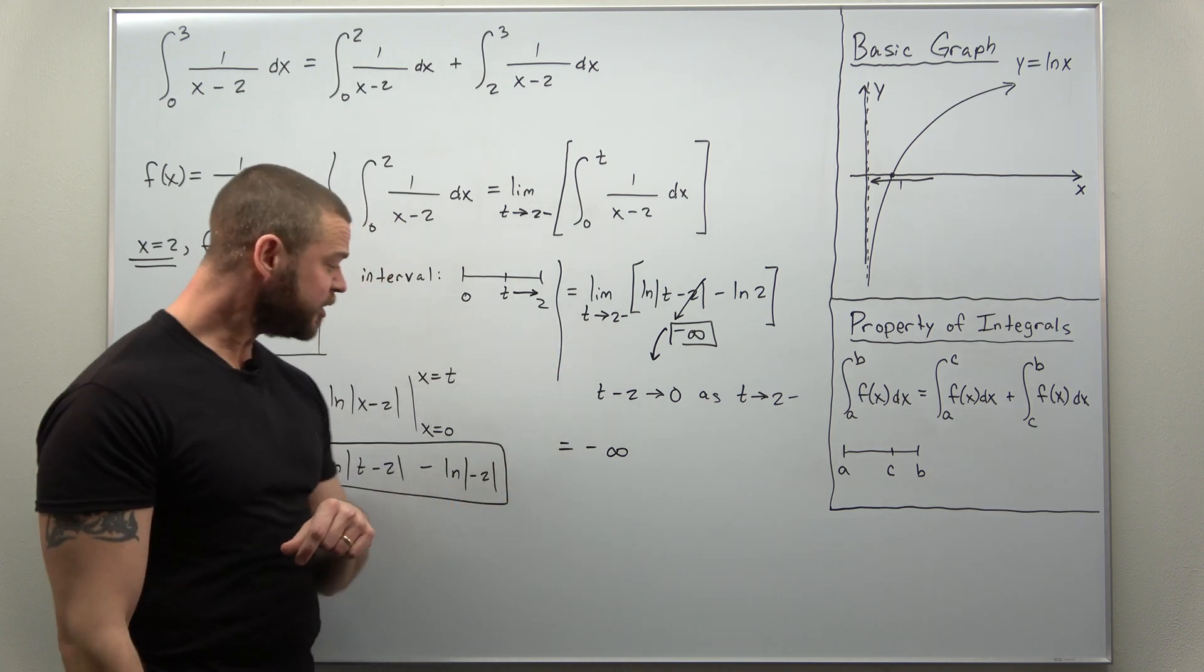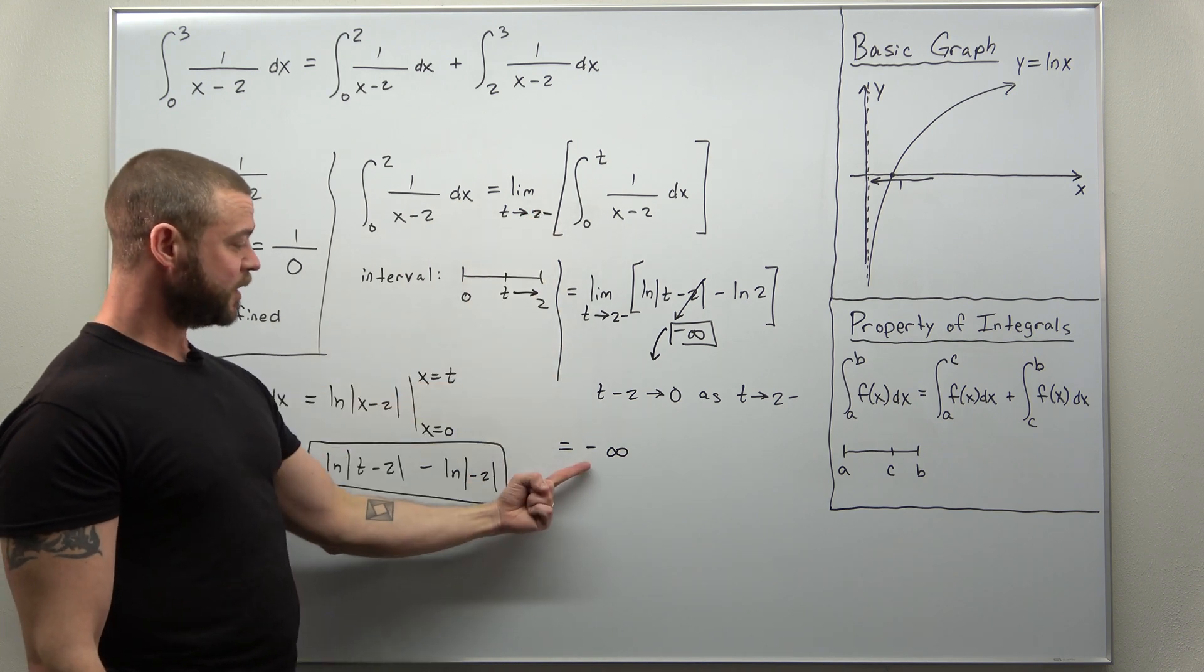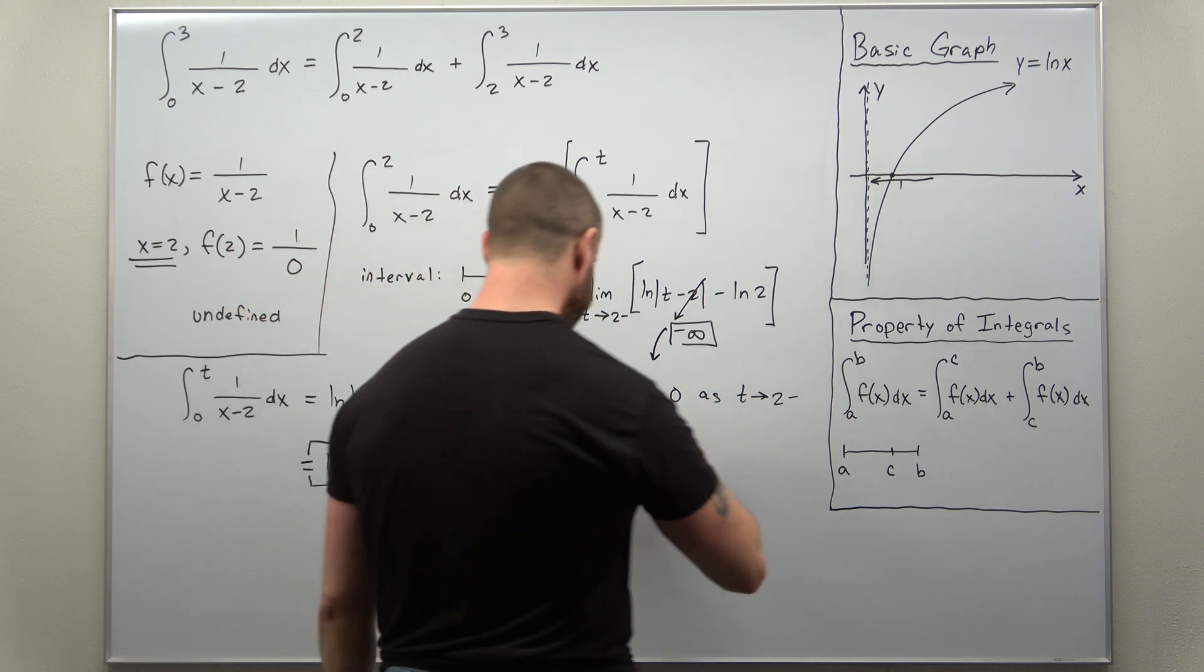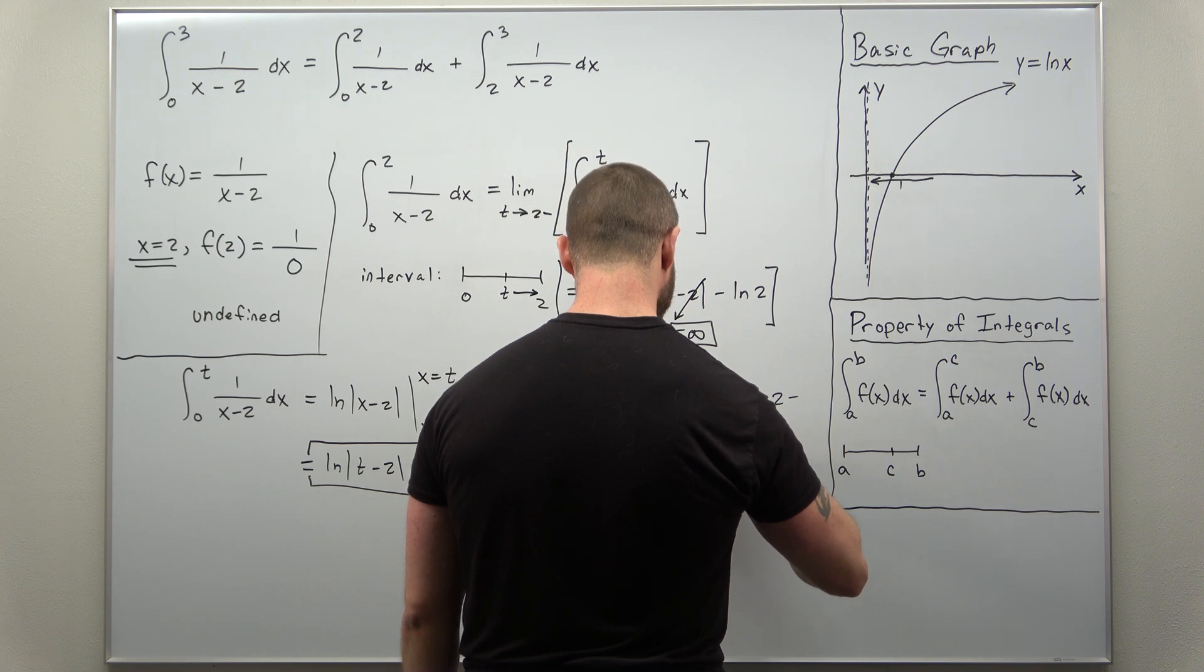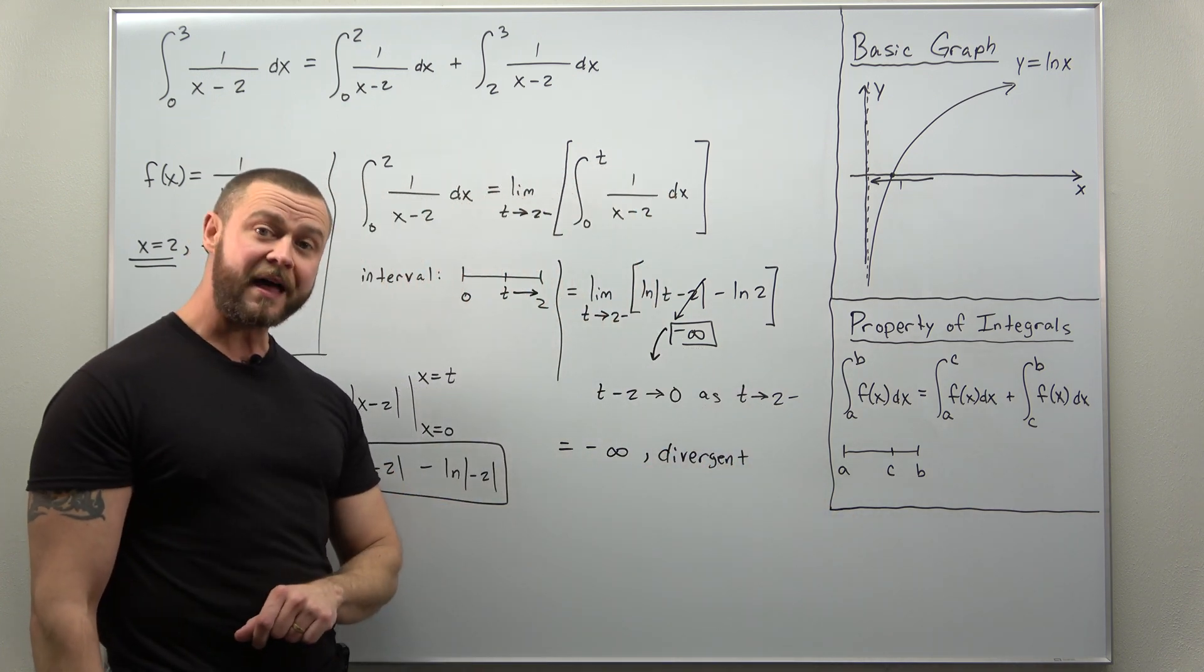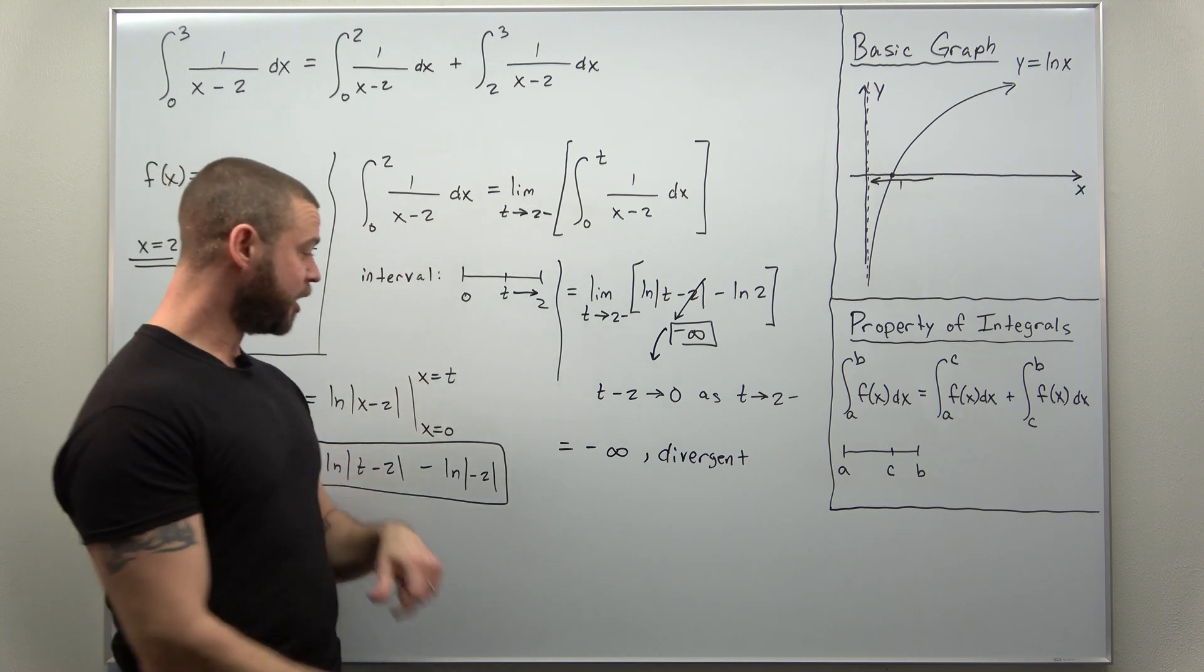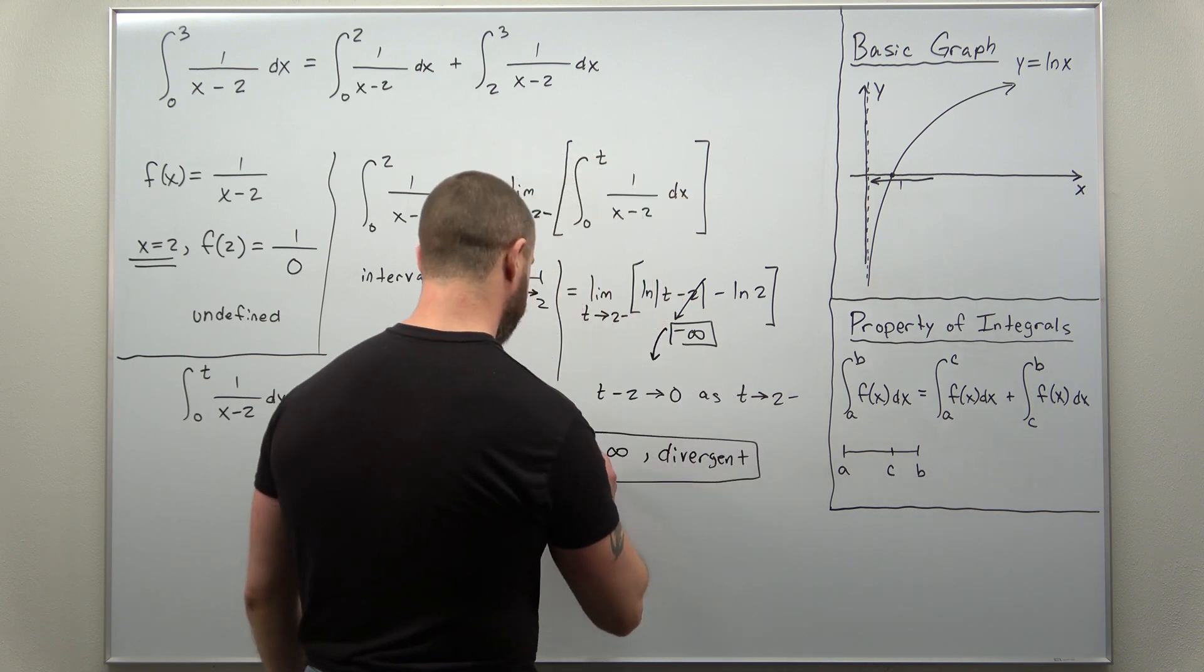So what can we conclude from this? We have our limit here which comes out to be a negative infinity. That limit does not exist. Limits only exist when they approach a single finite number. So we say here that this improper integral, one of the ones that we split off to, is divergent.